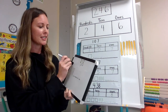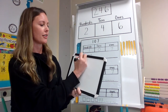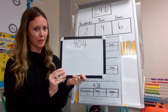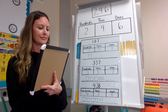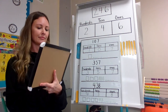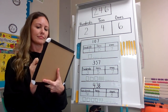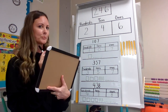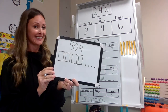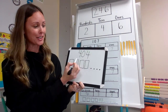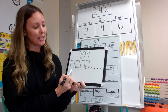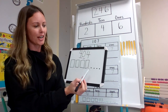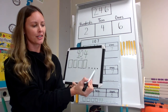All right friends, your next number is going to be 404. Give it a try. You ready, friends? You're going to start with your hundreds place, so you need four of these squares: 100, 200, 300, 400. Do we have anything in our tens place? That's a zero. So we have 400, 401, 402, 403, 404.